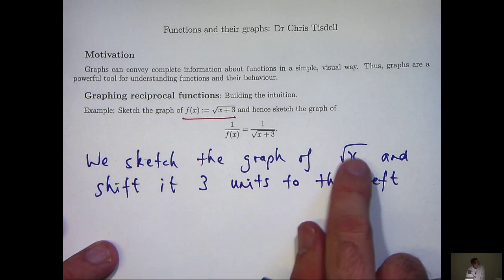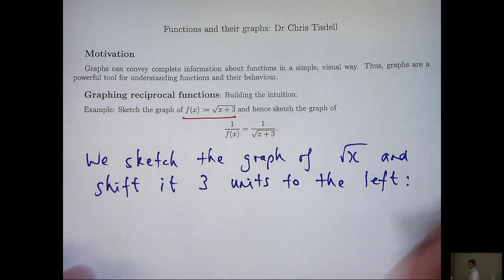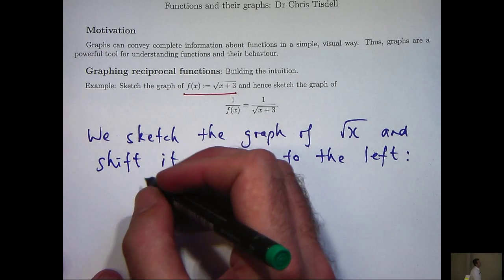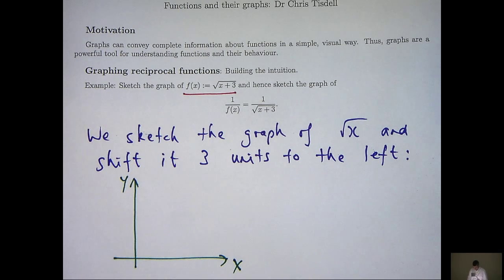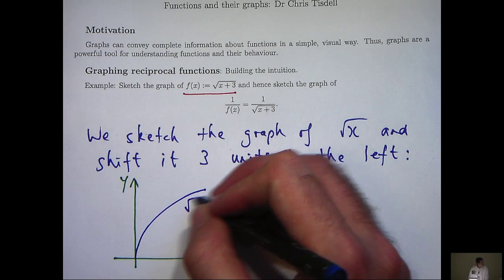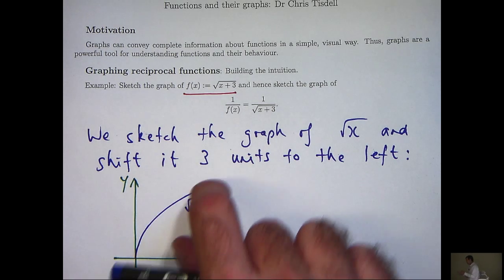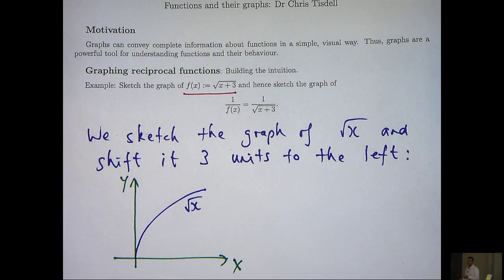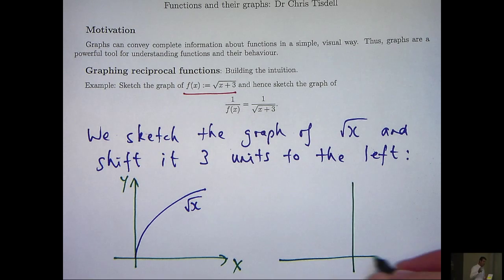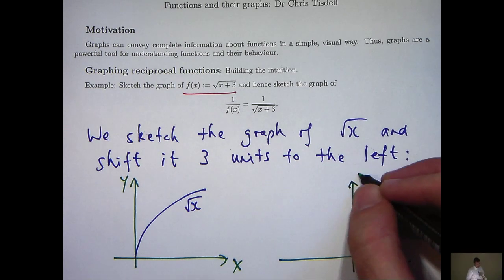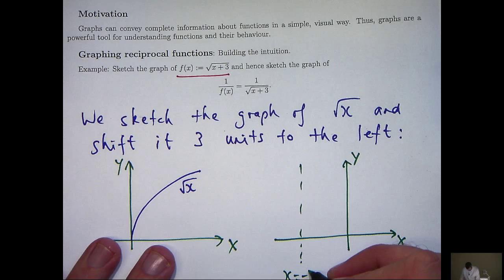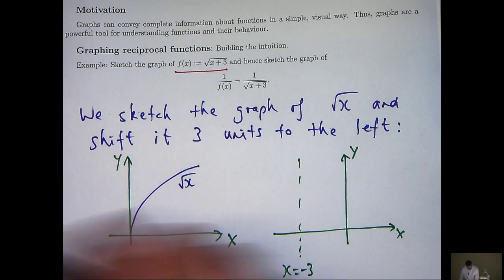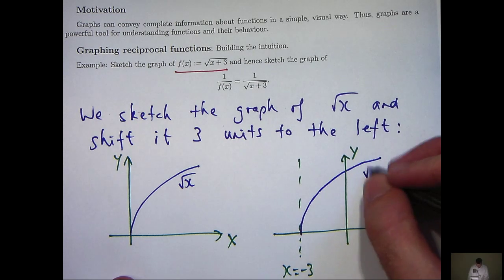If this was a minus 3, we'd take the graph of this curve and shift it 3 units to the right. Now, I am assuming here that you can sketch simple, the graph of simple things like simple functions like root x. Okay, so this is what the graph of root x looks like. So we're going to take this curve and shift it 3 units to the left. So here's the line x equals minus 3. So just shifting that curve along should get something like this.